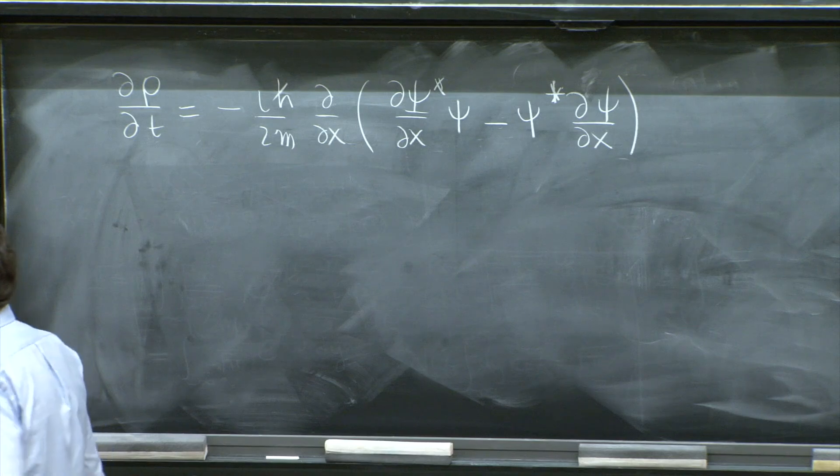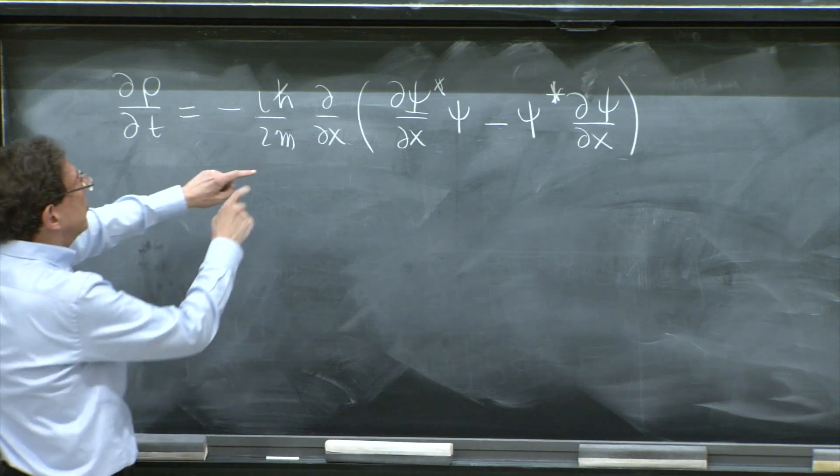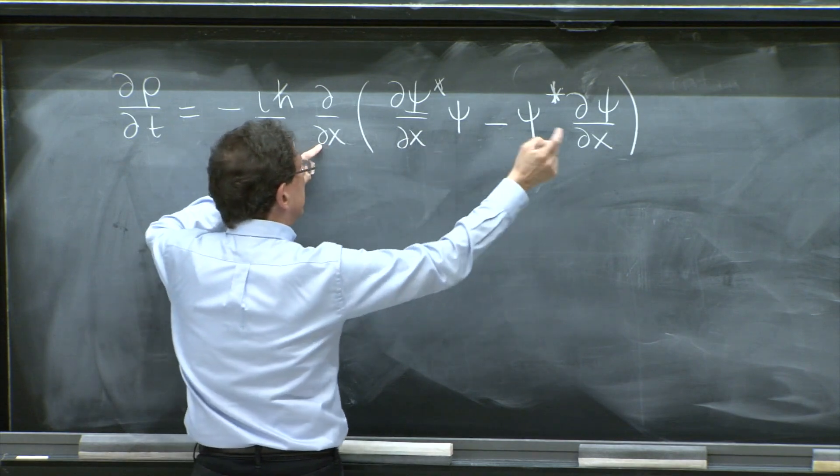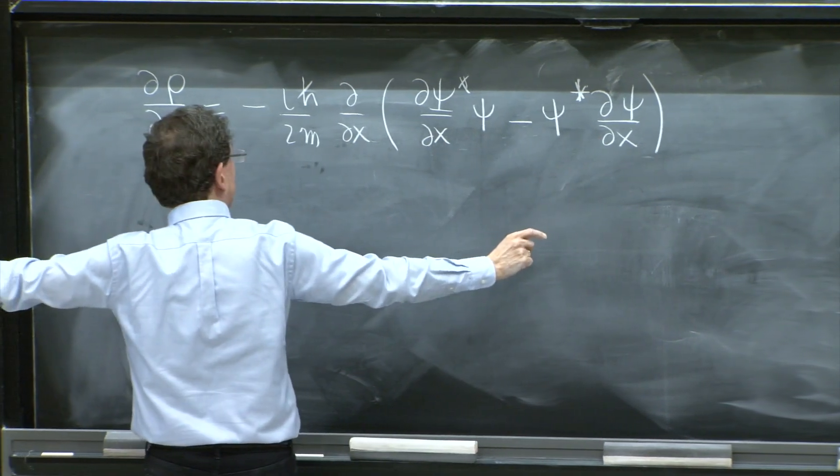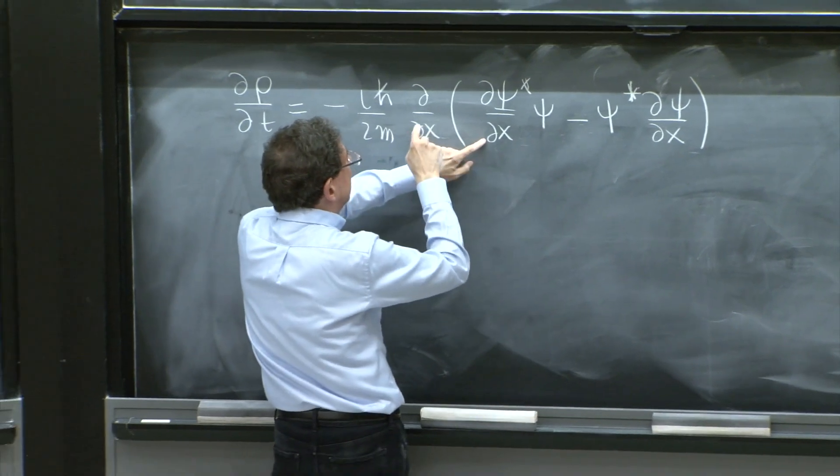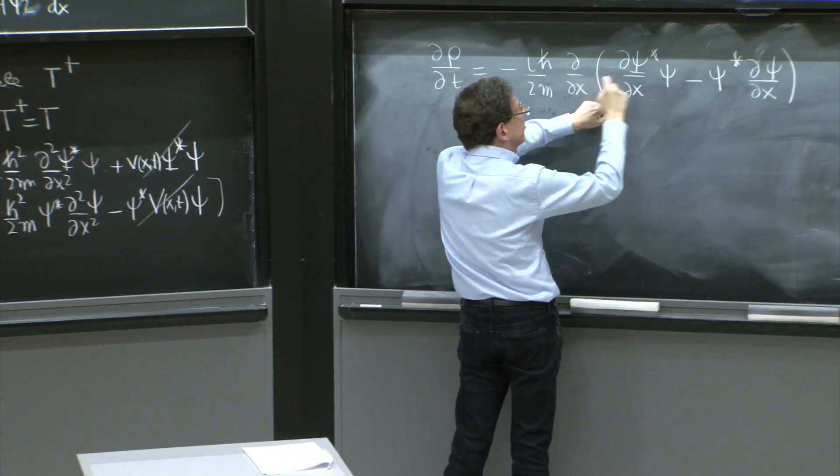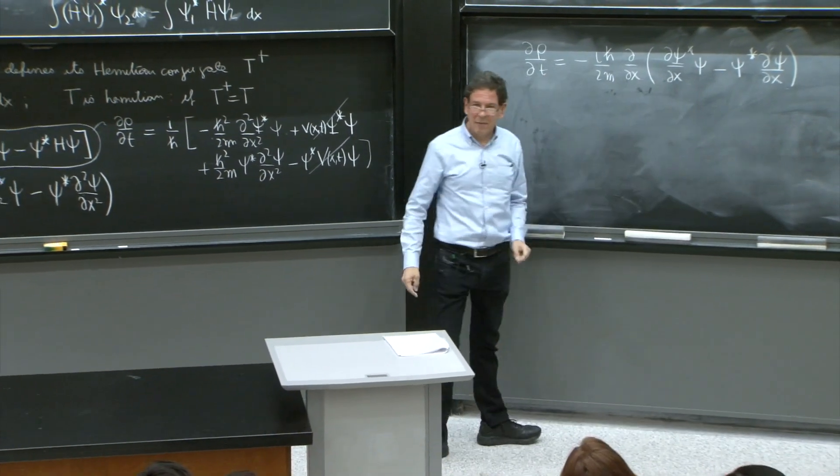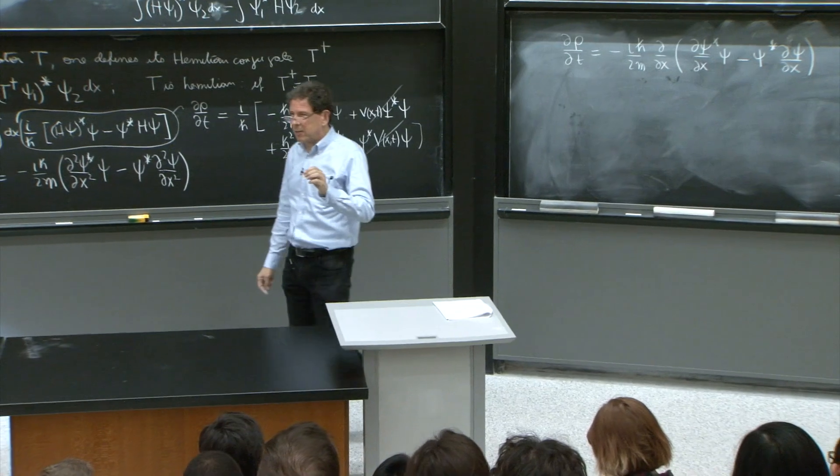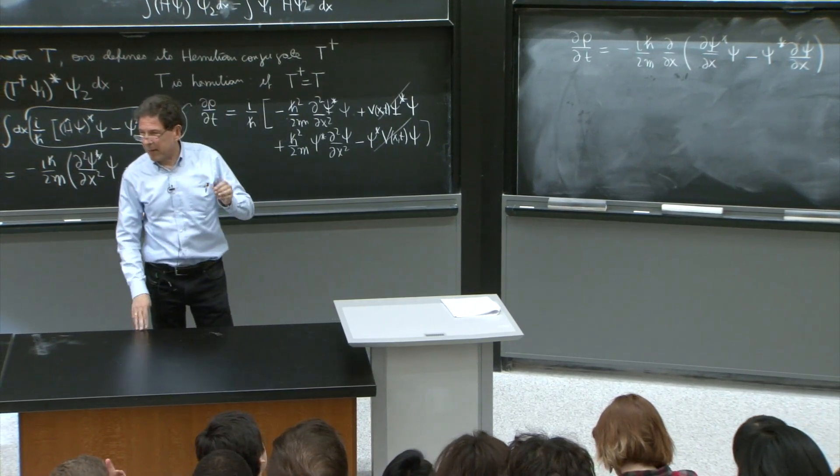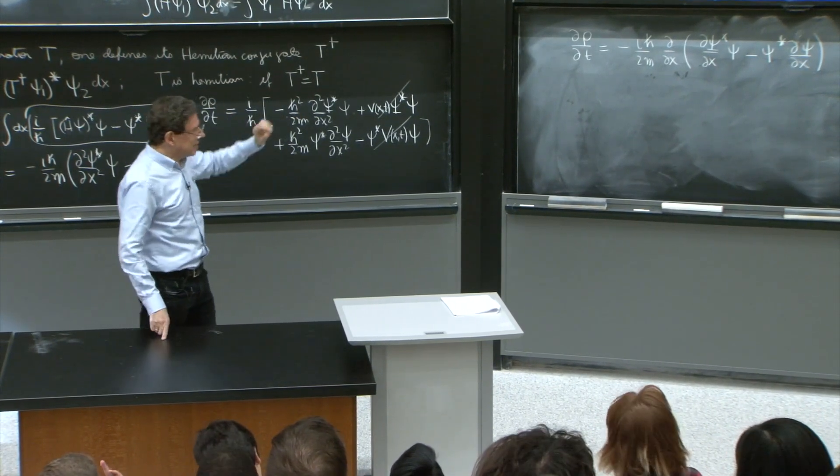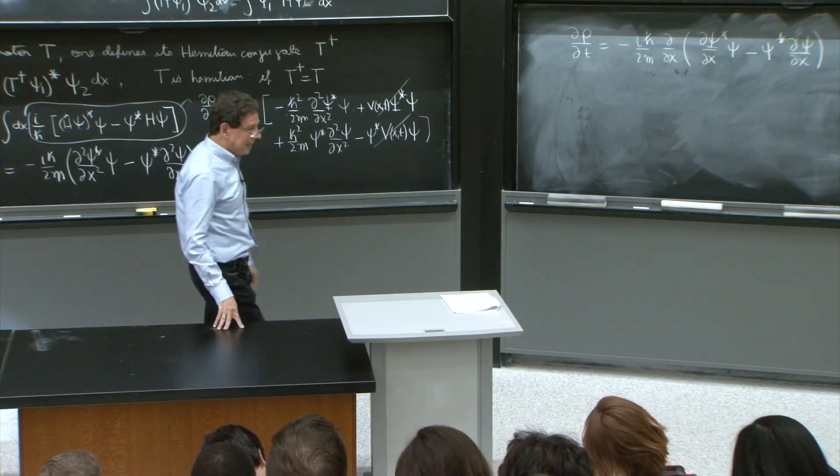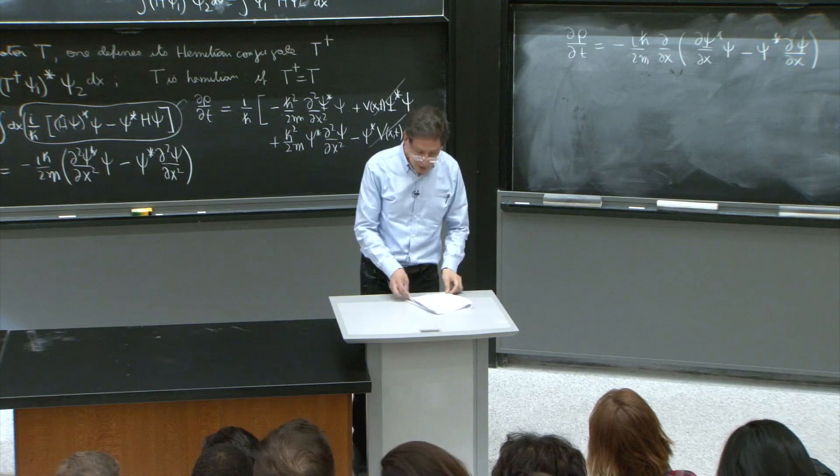The nice thing that happens here is that if you act with this d/dx, you get the second derivative terms that you had in there. But you also get derivatives acting here on the psi and here on the psi star. But those would cancel. So it's a very lucky circumstance. It had better happen. But this is a total derivative with respect to x. And that's just very good news.